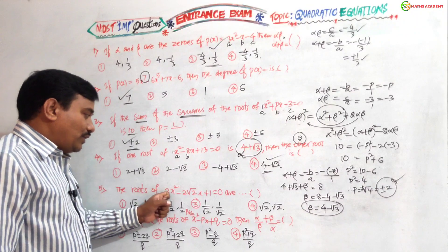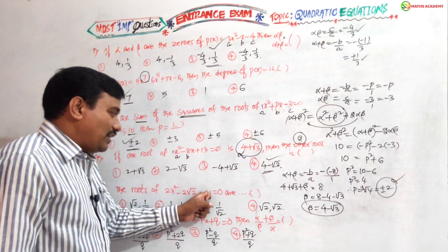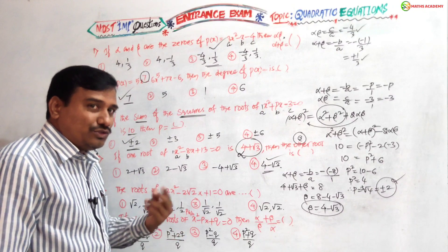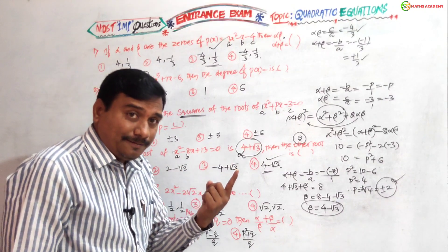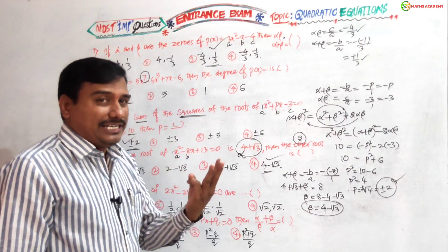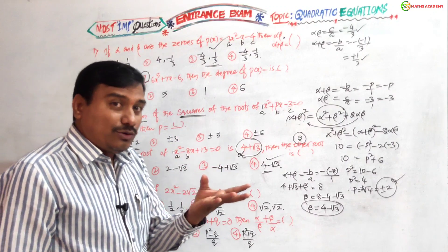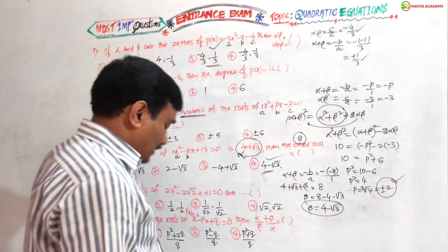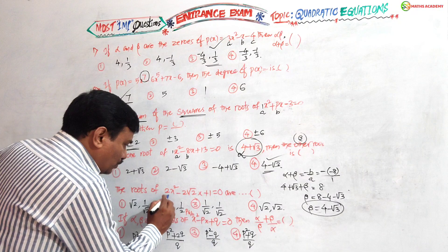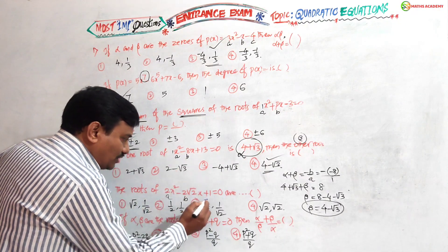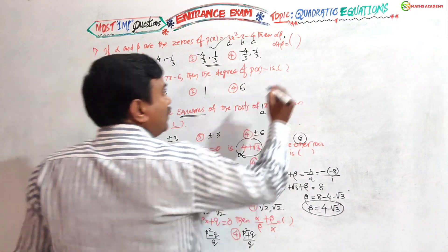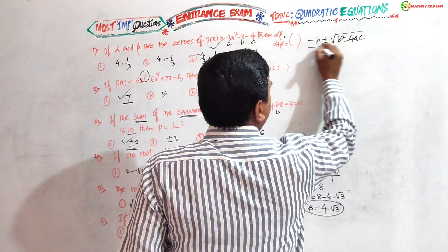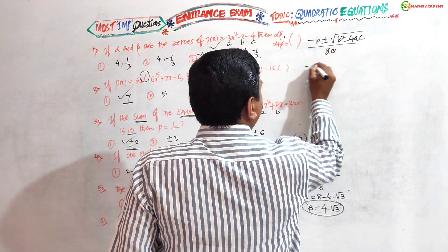Fifth question: find the roots of 2x squared minus 2 root 2 x plus 1 equals zero using the formula method. Here a is 2, b is minus 2 root 2, c is 1. The formula is: x equals minus b plus or minus square root of b squared minus 4ac, all divided by 2a. Substituting b as minus 2 root 2.